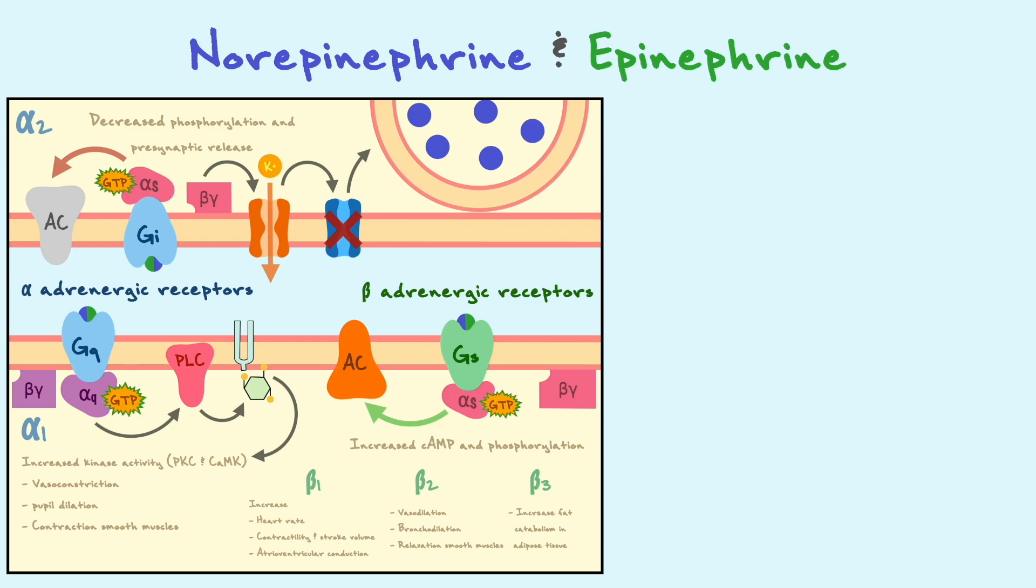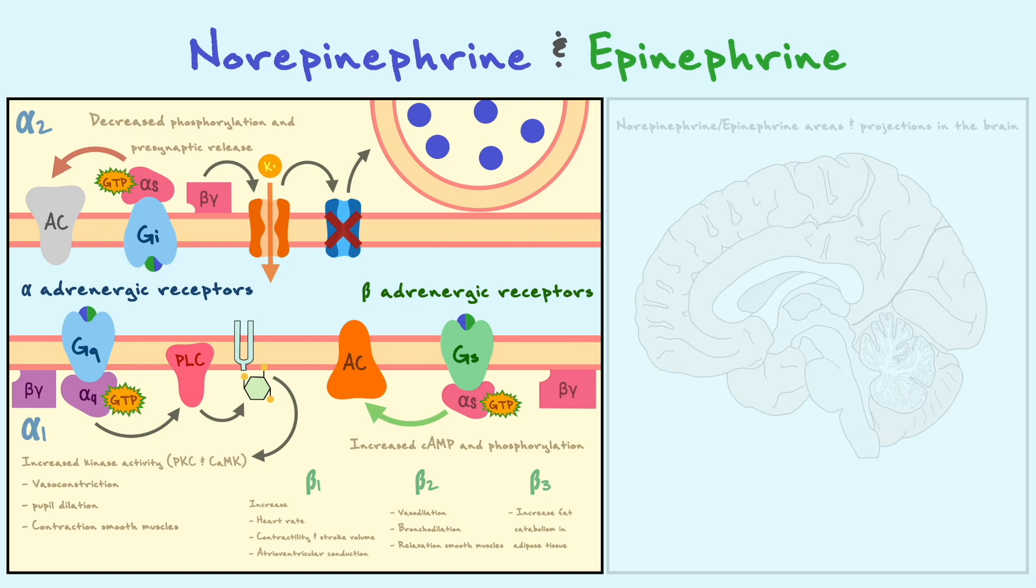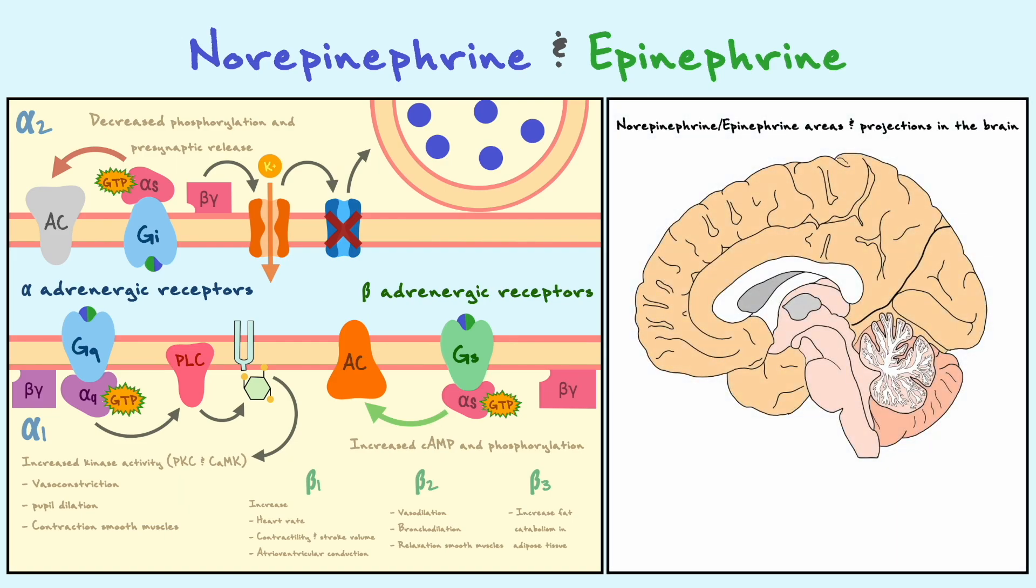Although the two neurotransmitters activate roughly the same receptors, norepinephrine and epinephrine have distinct functions due to their different expression. The main place in the brain where one can find norepinephrine neurons is in the locus coeruleus, which is located in the pons of the midbrain. Beyond what we have discussed on the sympathetic nervous system, the projections coming from the locus coeruleus are involved in sleep, wakefulness, arousal, and attention to name a few.